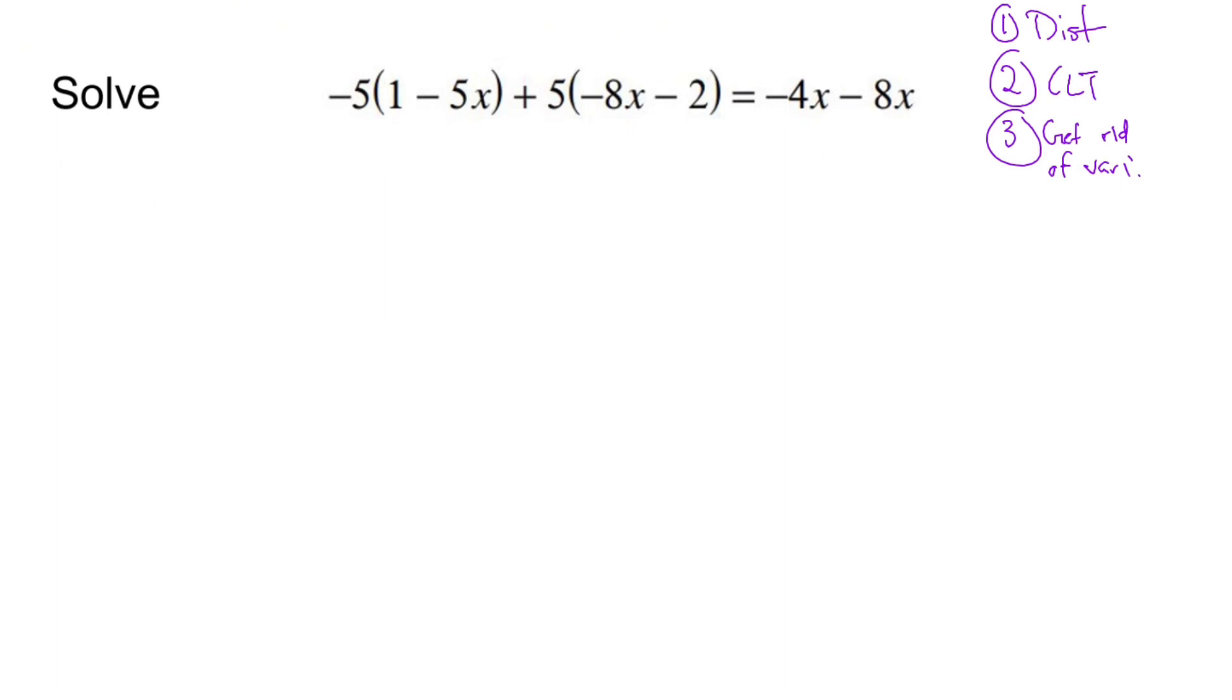So step number one is going to be distributive property. I have two sets of distributive properties on the left. Negative five only deals with this parentheses here. Negative five times one is negative five. Negative five times negative five X is negative five times negative five is positive. Five times five is 25. X comes along for the ride. You're done.